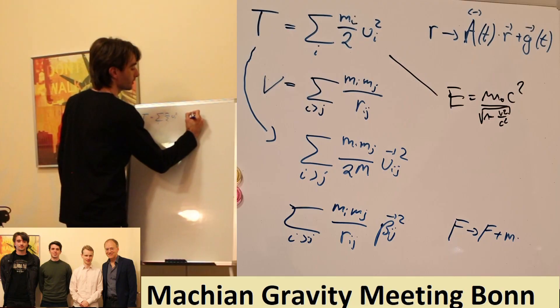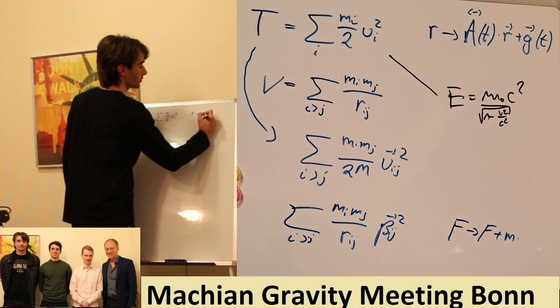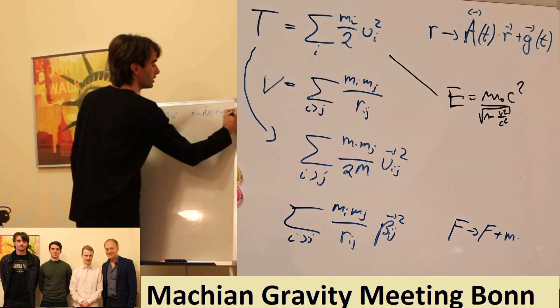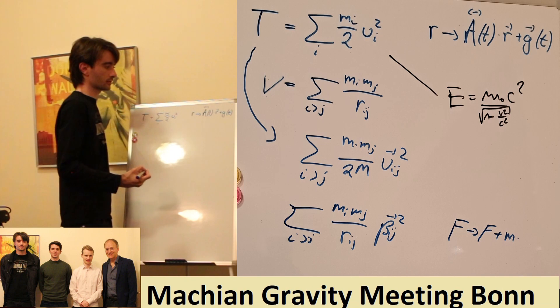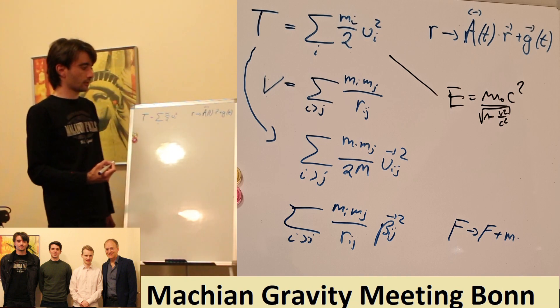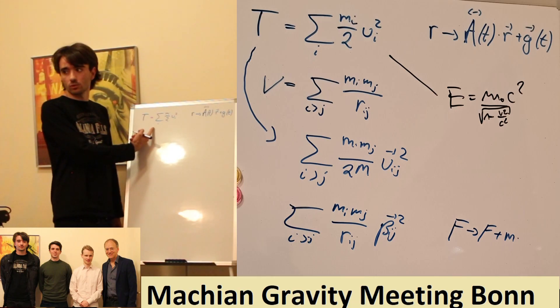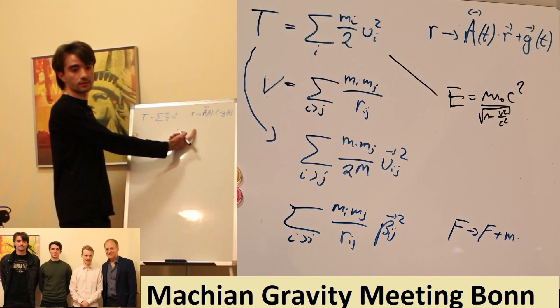We said that the Machian theory needs to be invariant under arbitrary transformations of this form, where A is a matrix times r plus g which has an arbitrary time dependence. A Lagrangian which is dependent on this kinetic energy or which is built with this kinetic energy is not invariant under this.